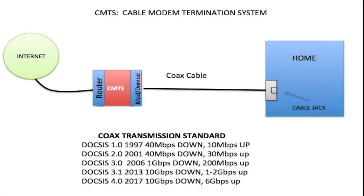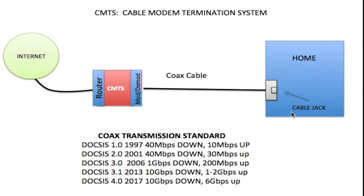Today we're going to be talking about cable internet and how it works. Here we have the internet connected back to a CMTS. CMTS stands for Cable Modem Termination System, and this is located within the ISP's office. On one side of the CMTS is a router interface which connects back to the internet, and on the other side is a modulator/demodulator which is connected to the coaxial cable interfacing your modem.